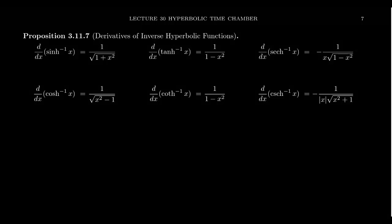With the six hyperbolic inverse functions at hand, we can talk about their derivatives too. The derivative of inverse sinh, or arc sinh if you prefer, is going to be 1 over the square root of 1 plus x squared. Let's see how that is.